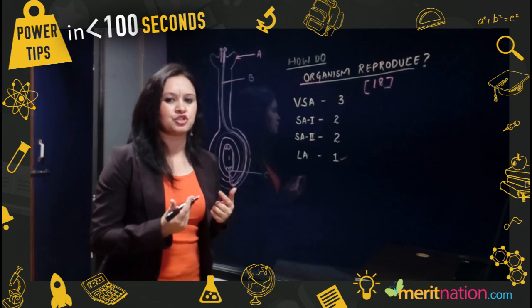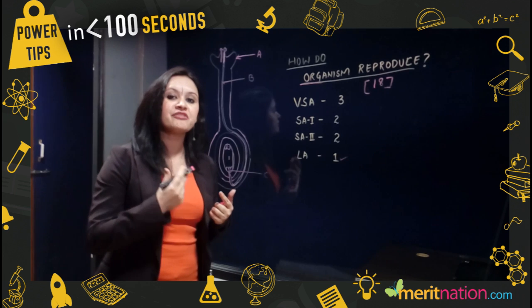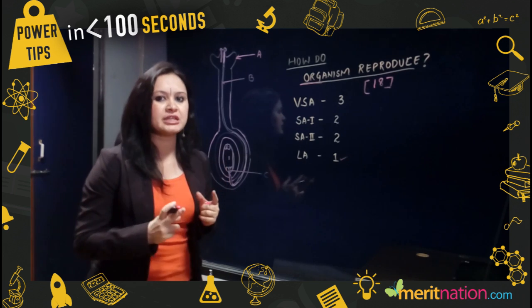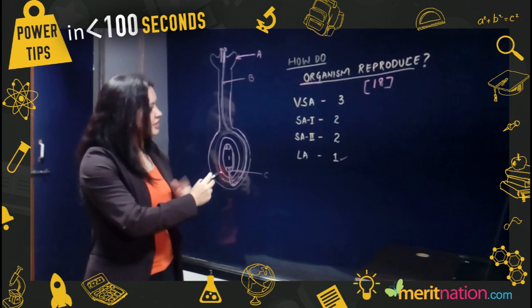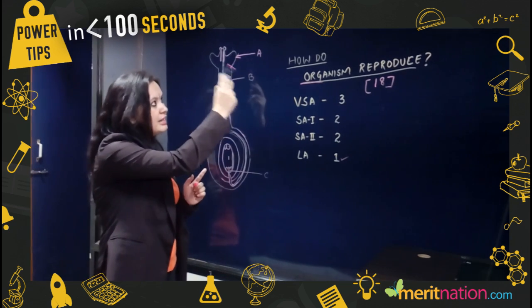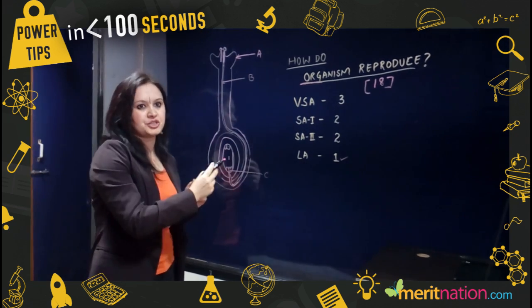There is also a very specific, very favorite CBSE favorite topic—pollination and fertilization in flower. And a specific type of question is asked in which this kind of a diagram is shown, and you have to label the diagram and write the functions basically of this part.